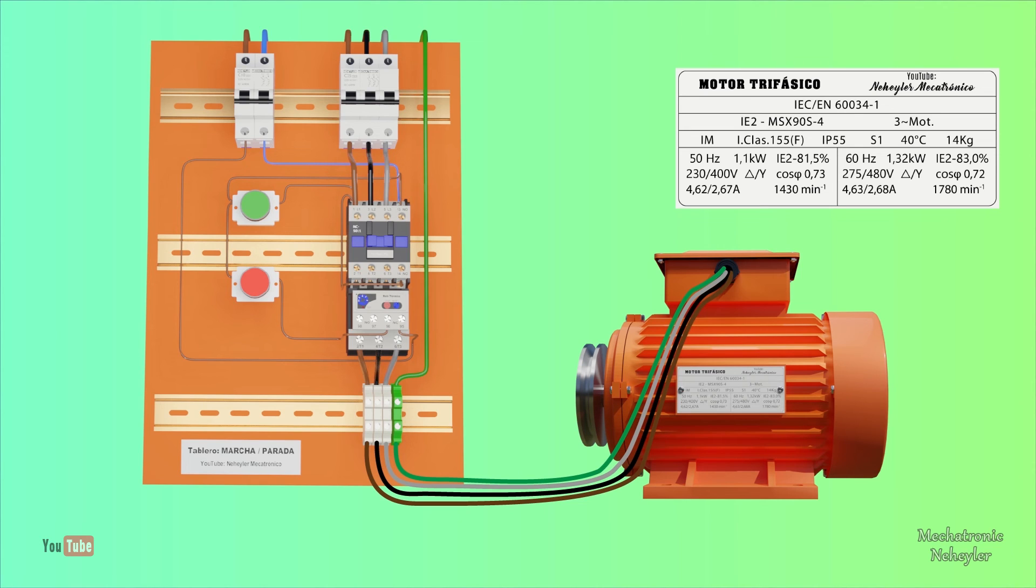Assuming we have a 400-volt supply at 50 hertz, on the nameplate it tells us that at that voltage value, the motor must be connected in star, and that the nominal line current is approximately 2.67 amps.